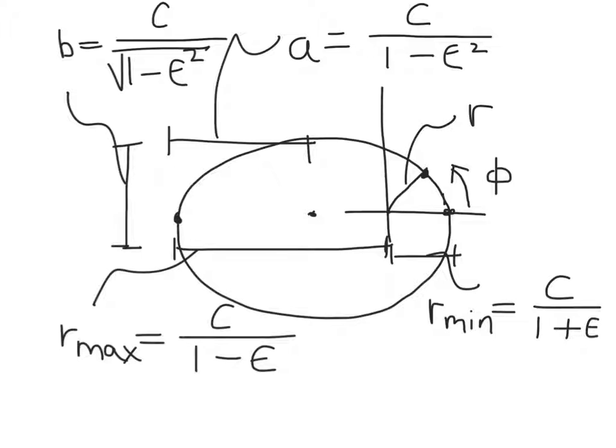And so here, for example, is our ellipse. You can see that phi, in this case, measures the angle of one of the masses relative to the x-axis here. So here's phi.